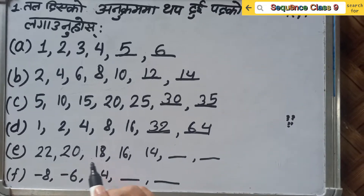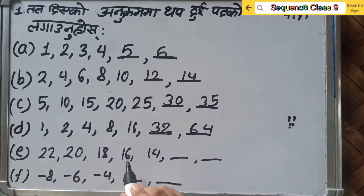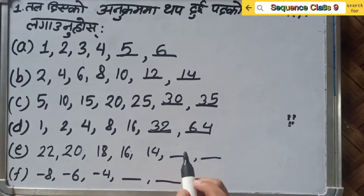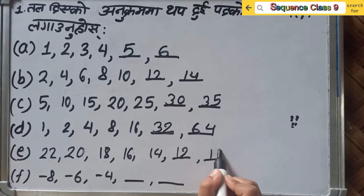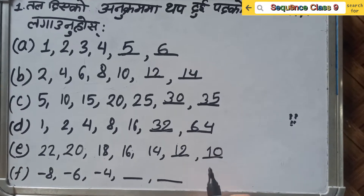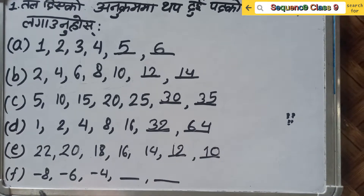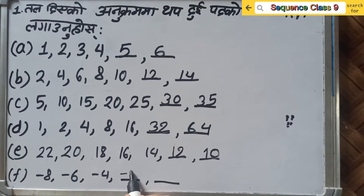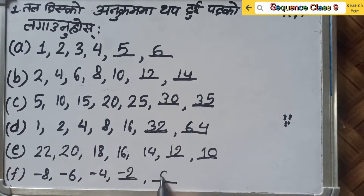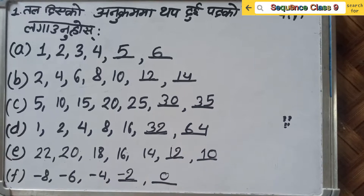Now a decreasing sequence: 22, 20, 18, 16, 14, 12, 10, minus 8, minus 6, minus 4, minus 2, 0.